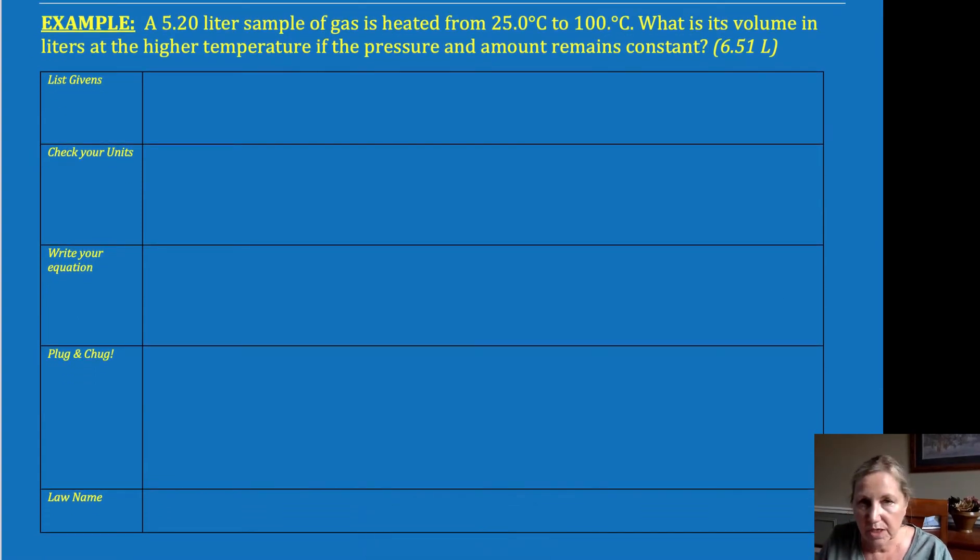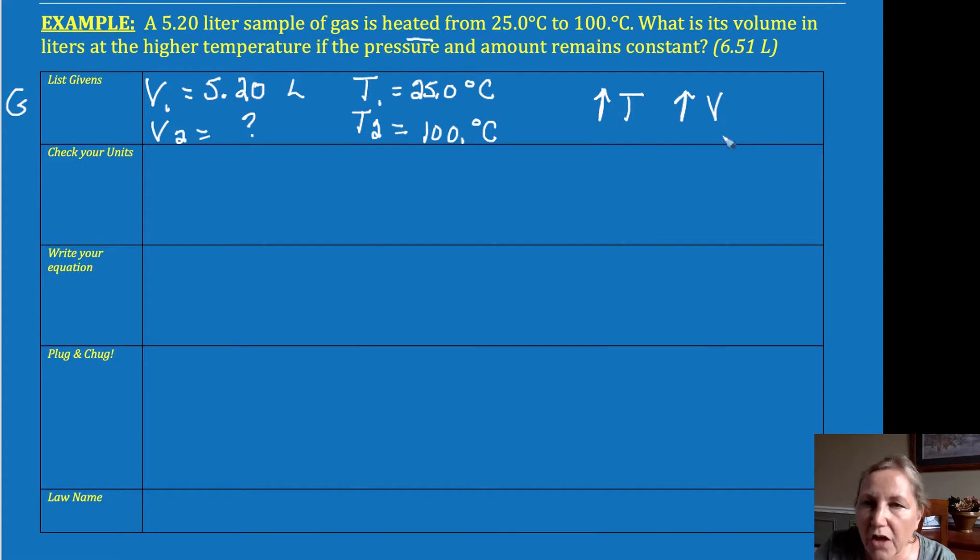Let's do one more just to make sure you have a good handle on this for class. Now in this next one, let's list our givens. I usually don't label the volume until I know that the problem tells me it changes. So I want to list it as I read. I have a volume of 5.2 liters. It's heated from, so my temperature went from 25.0 degrees Celsius. Now I know I had a change, so that's V1, T1. I know that's T2—it's 100 degrees Celsius. And it asks me what is my new volume at my higher temperature. So let's just think logically about it. We've got our givens. We have an increase in temperature. We expect to see an increase in volume. In other words, V2 should end up being greater than V1.